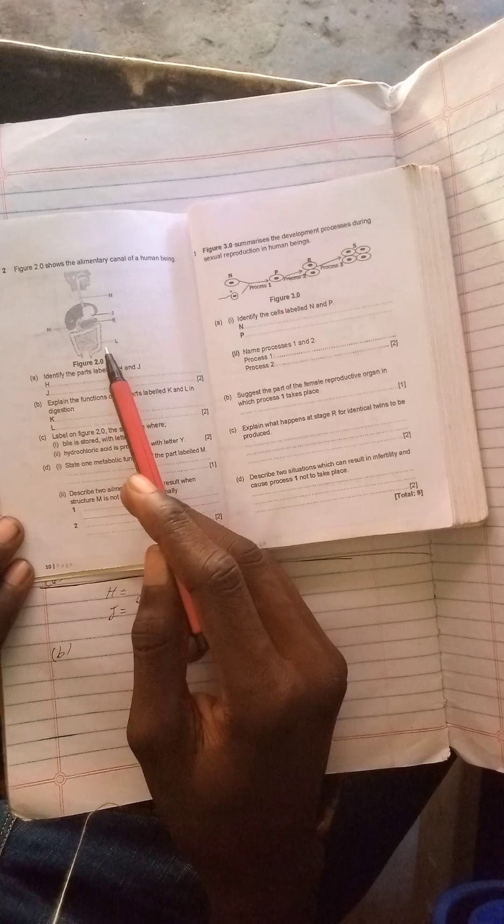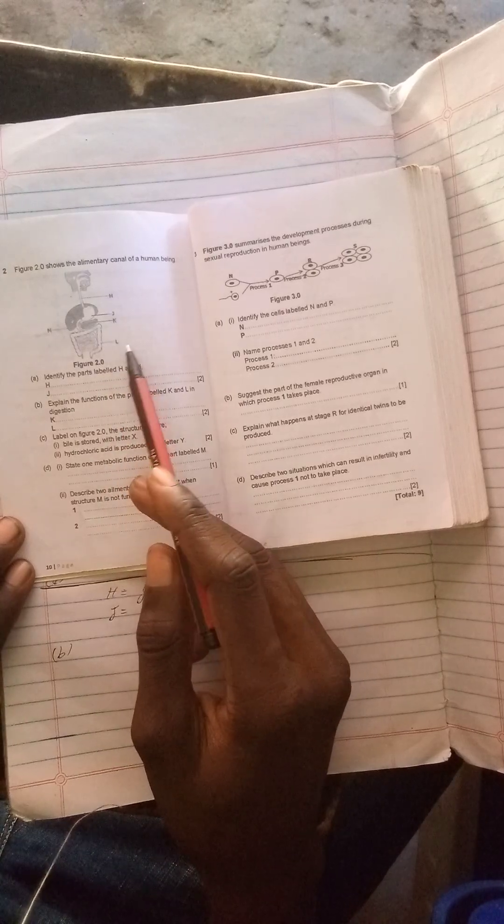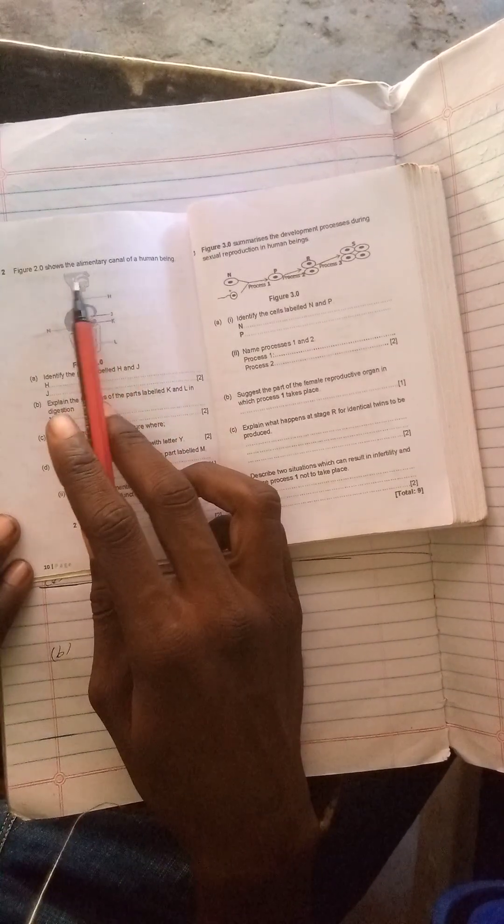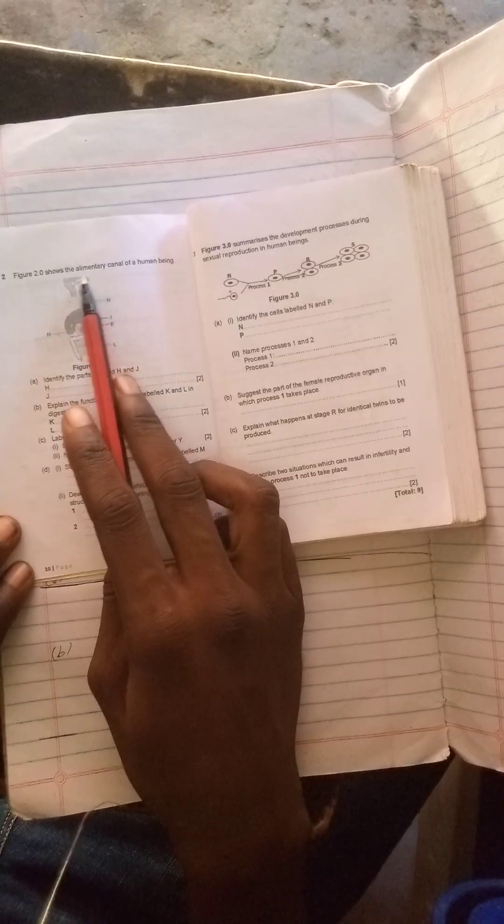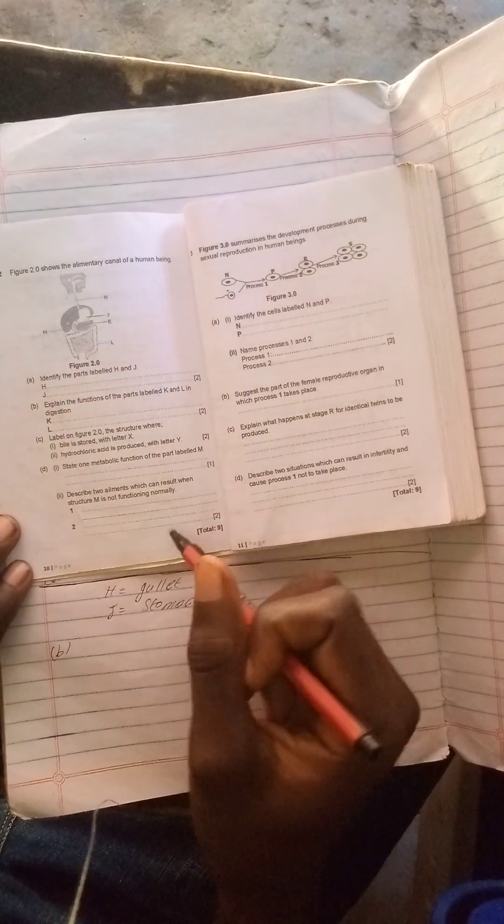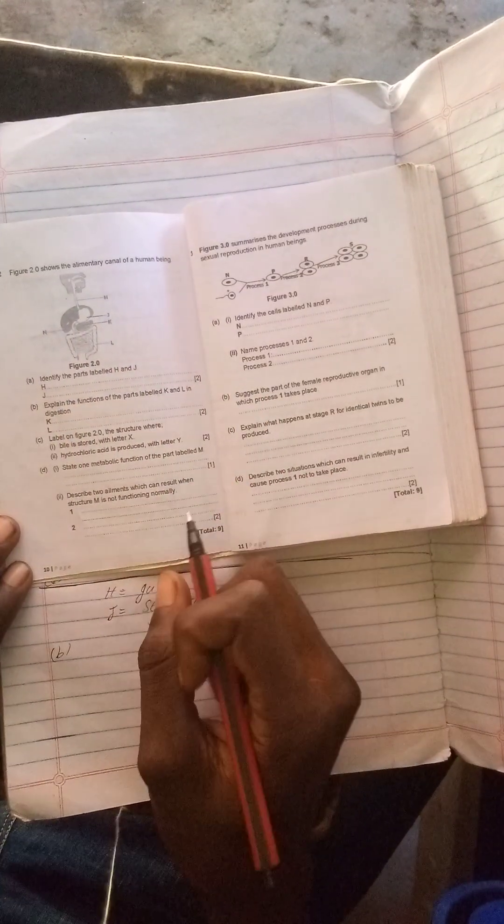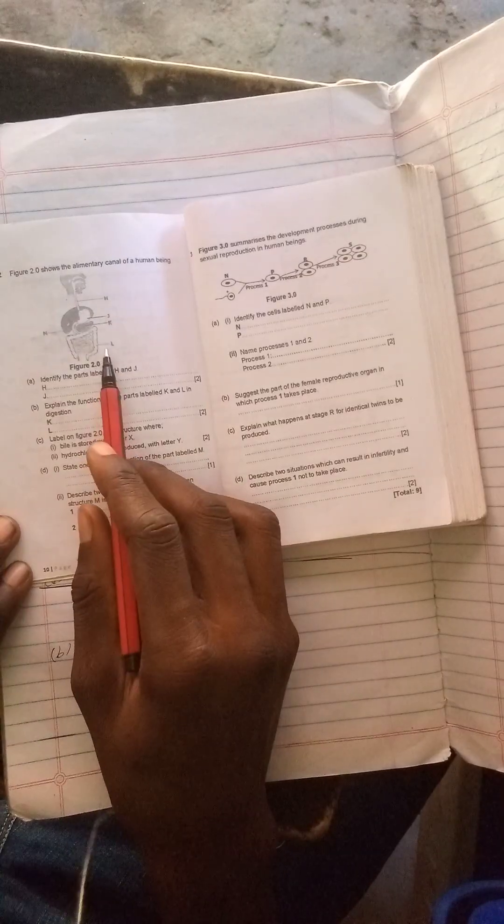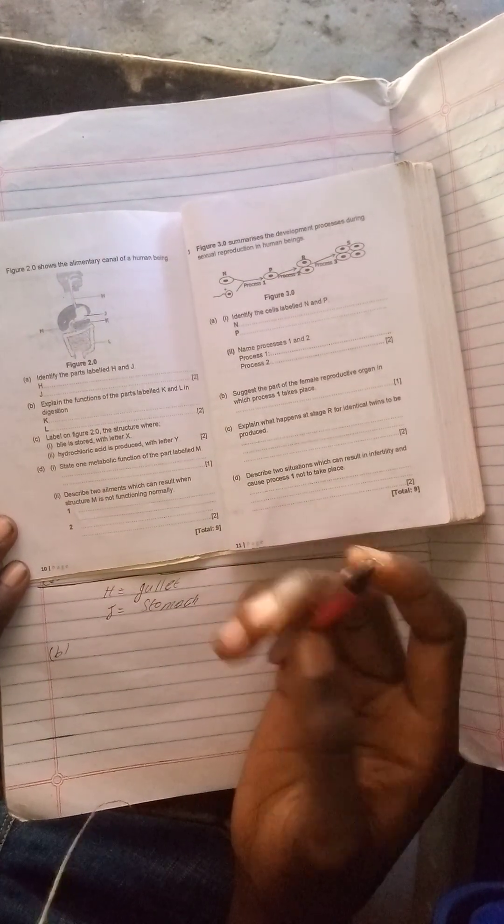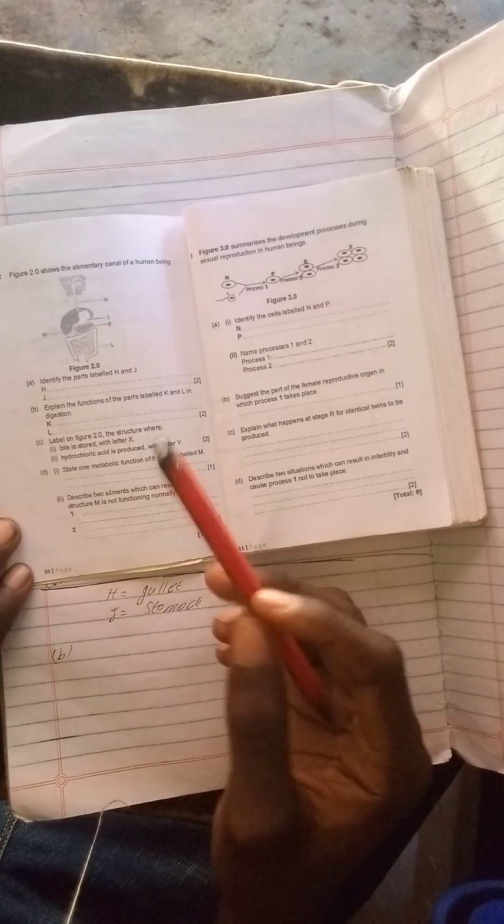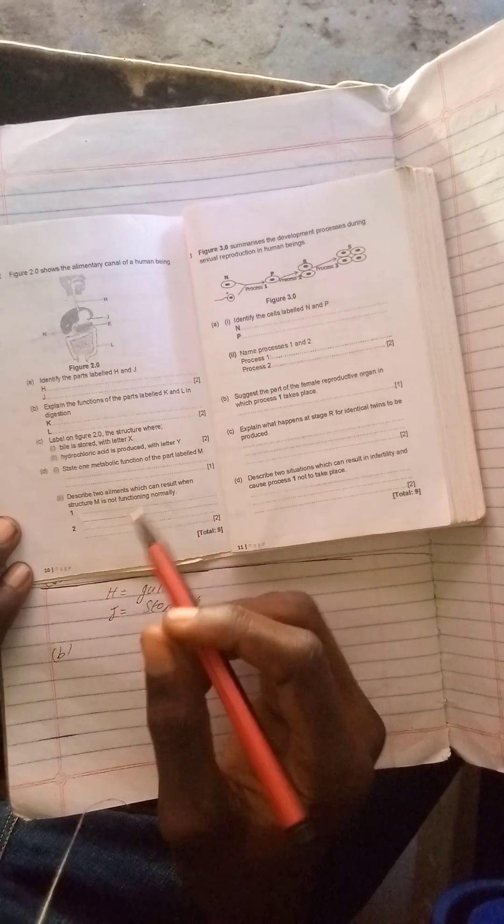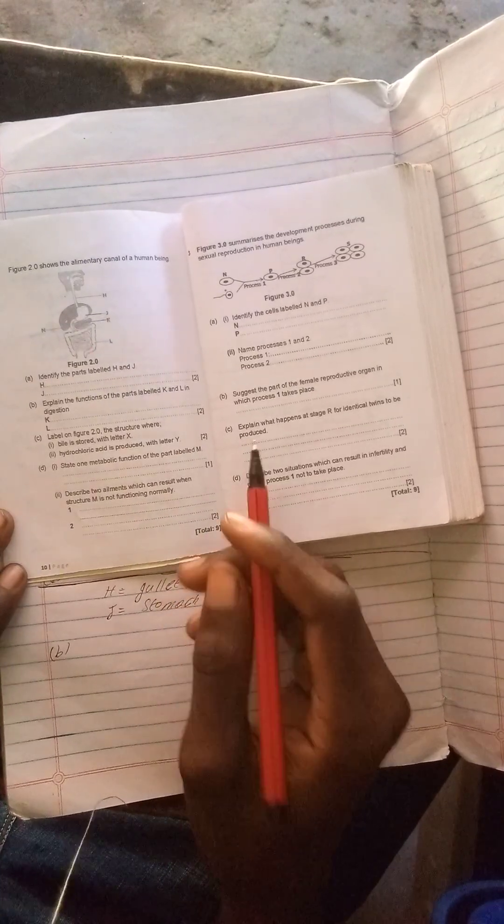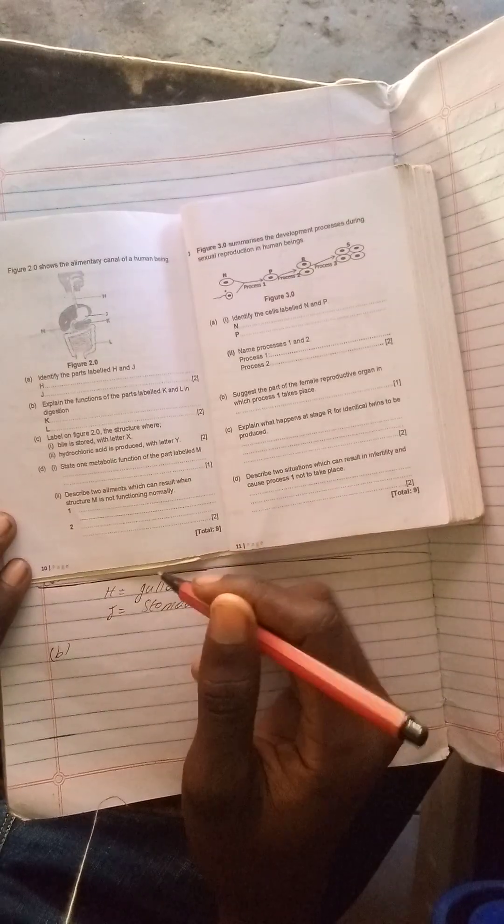The function of the large intestine in the alimentary canal, which is the digestive system of the human being, is to absorb water from the feces. That's one of the main functions of the large intestine.